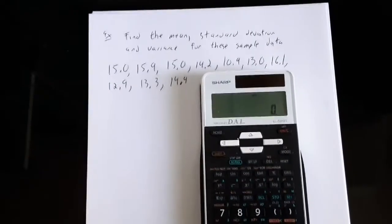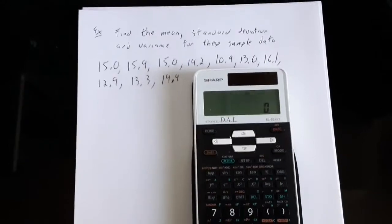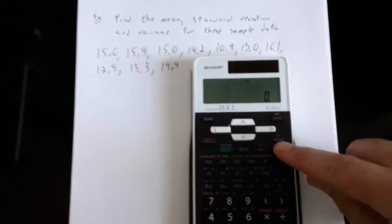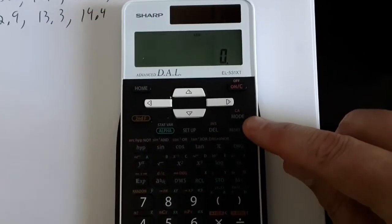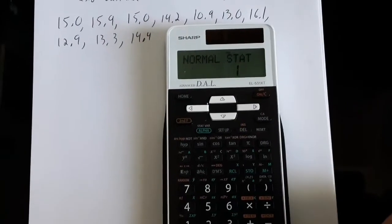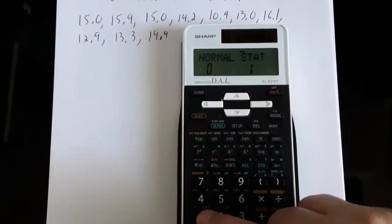Before I do any of that, the first thing that we have to learn how to do is to put our calculator in stats mode. We do that by using the mode button right here. If I touch the mode button it'll ask me do I want to be in the normal mode or stats mode, and I want to be in stats mode, so I'll touch button 1.